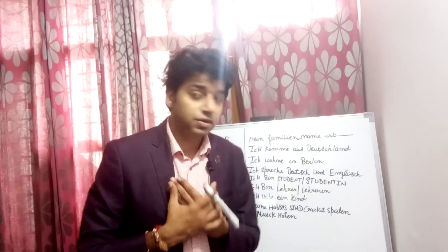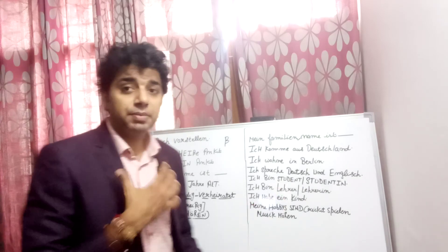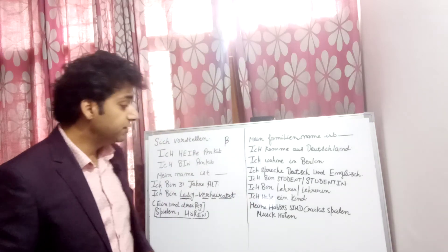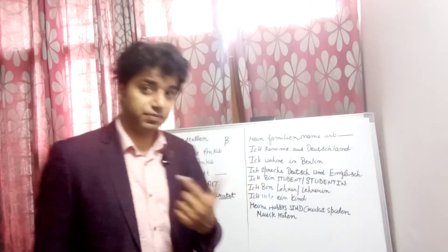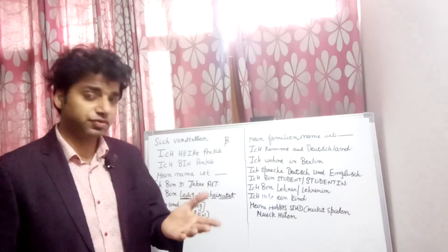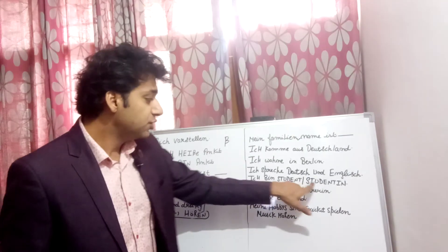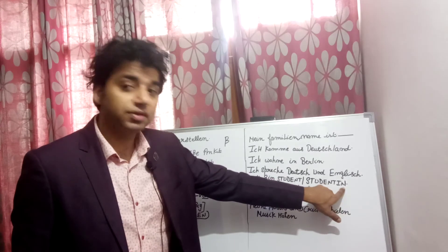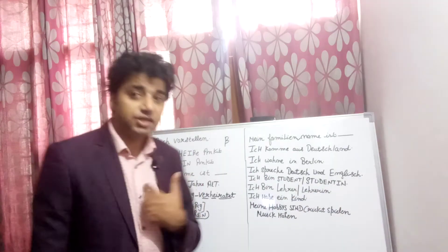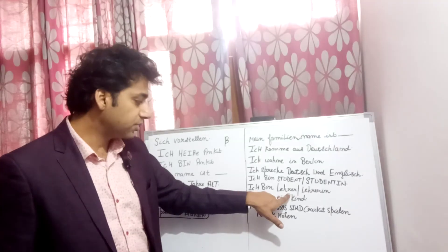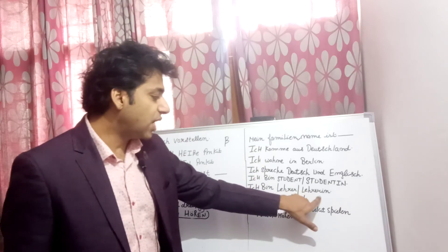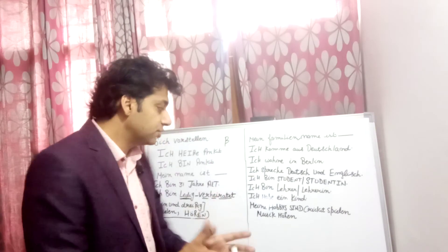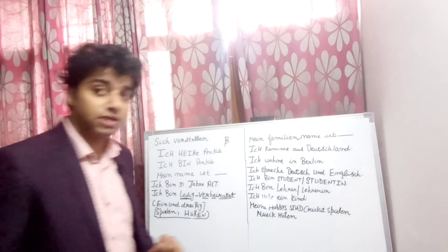If I say 'I am a student,' I say 'Ich bin Student.' In German, nouns have masculine and feminine forms. If a female is saying 'I am a student,' she says 'Ich bin Studentin.' Similarly, 'I am a teacher' for a male is 'Ich bin Lehrer,' and for a female it is 'Ich bin Lehrerin.' 'Lehrerin' is used for a female teacher and 'Lehrer' for a male.